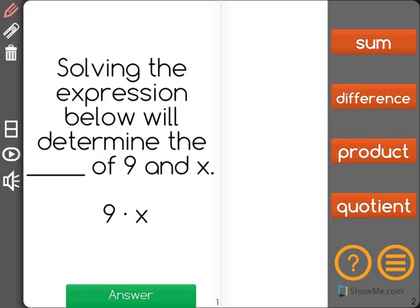Solving the expression below will determine the blank of 9 and x. So we have 9 times x. Another way to write this would be 9x. We don't usually write 9 times x because that's too hard to see.